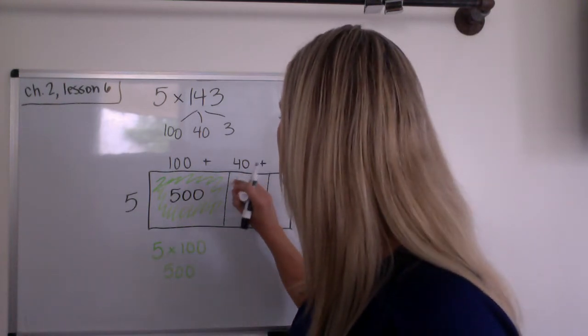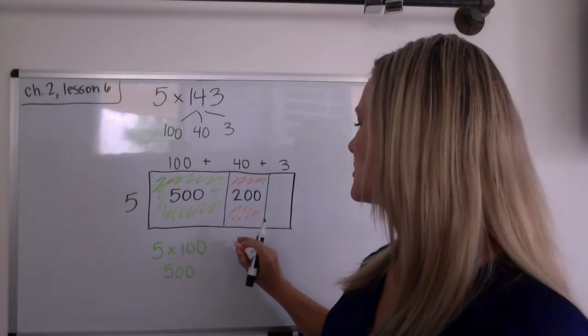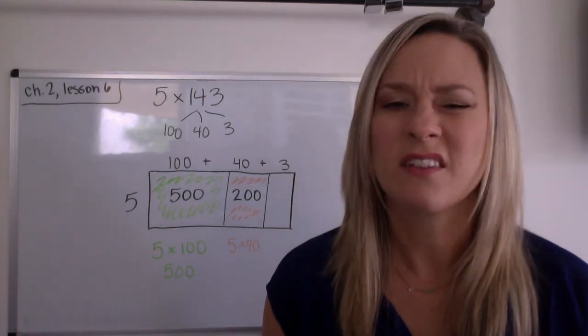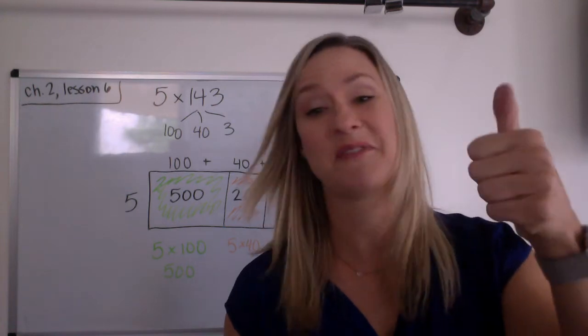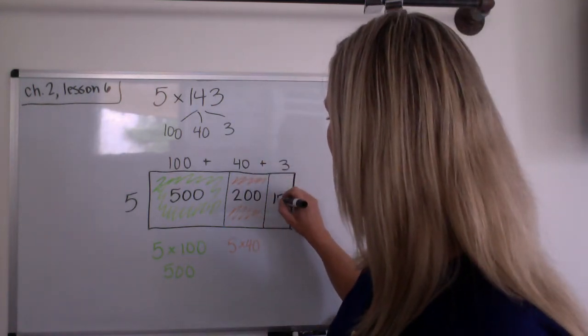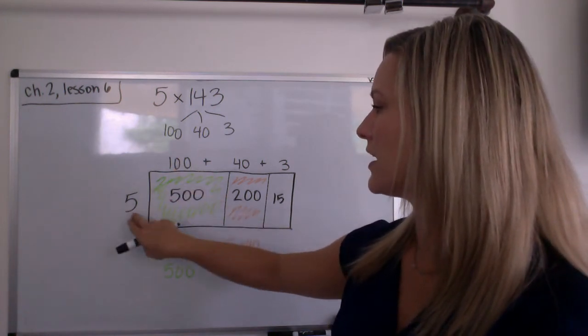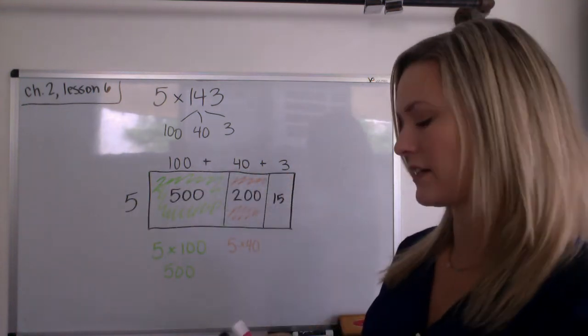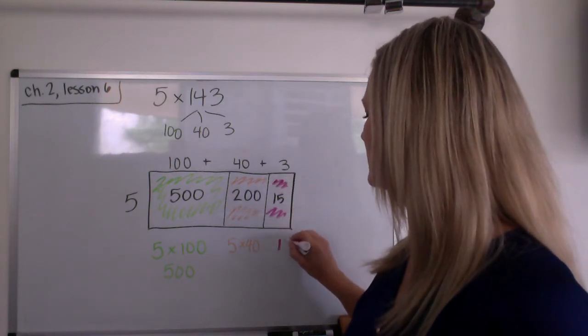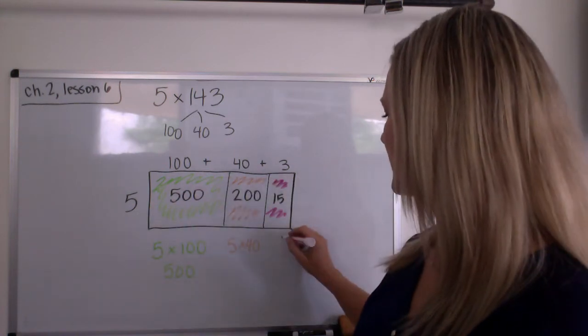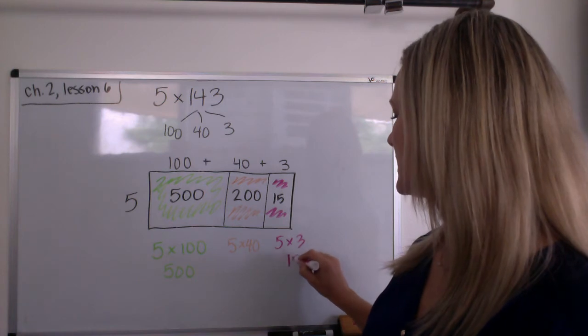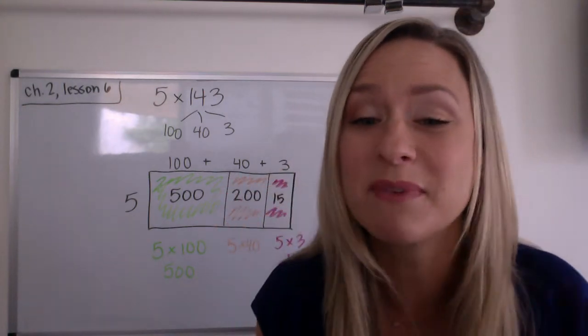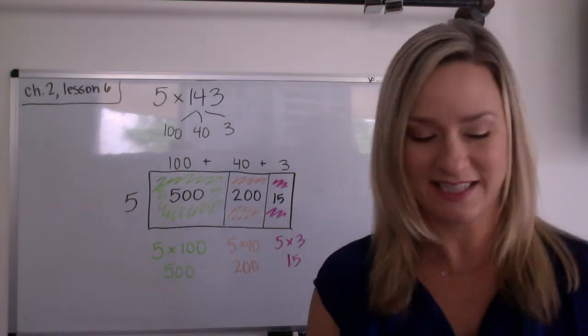And the last piece is 5 times 3. Lucky us, we know this one. 5, 10, 15. So that one's going to be 15. So I'm just solving each piece. 5 times 100 is 500. 5 times 40 is 200. 5 times 3 is 15. I'm going to make that one pink. Oops, forgot to write the actual 5 times 3 in there. So that was 15. I wish I had a class here in front of me so you could be like, you forgot to write the 200, Mrs. Compton. There, that's what it should look like.